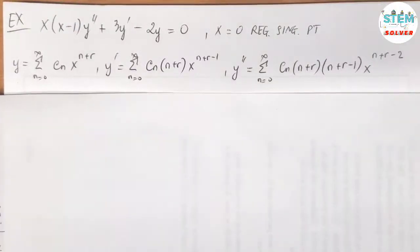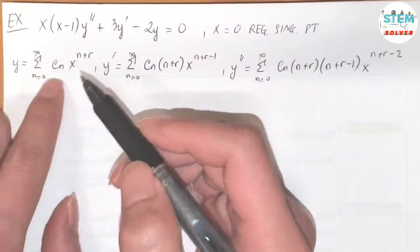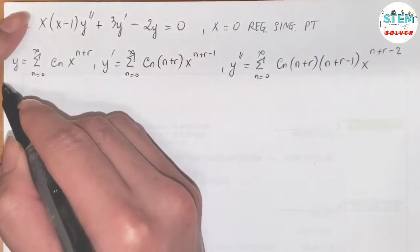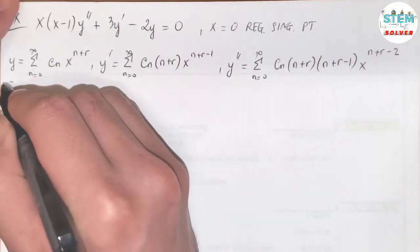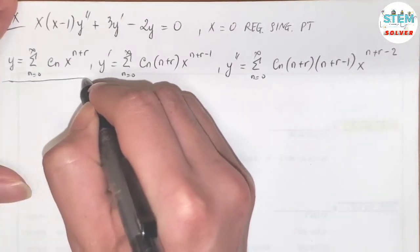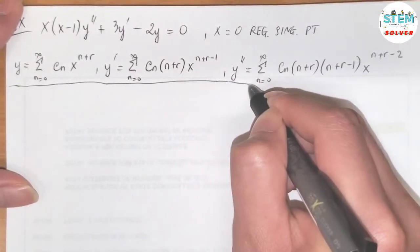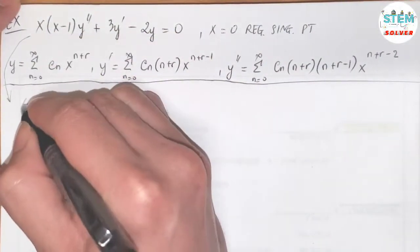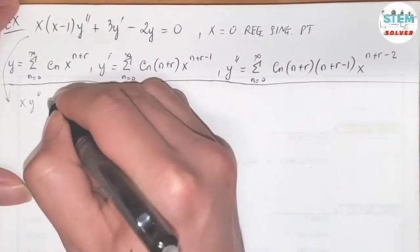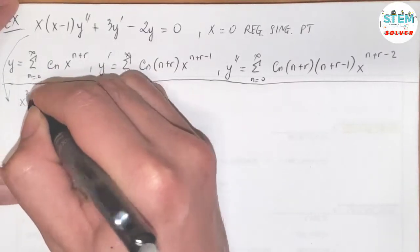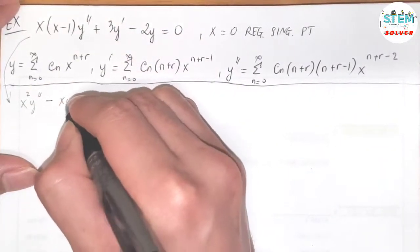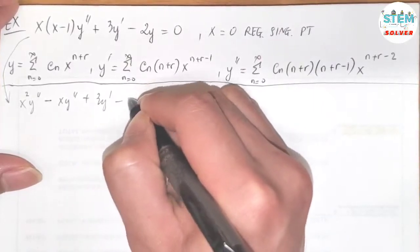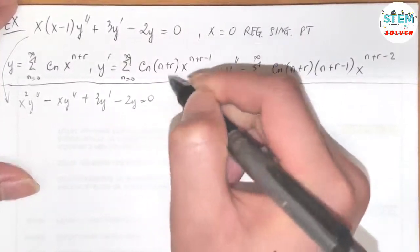Then we are going to plug this into the equation, but before I do that, I'm going to distribute it out. So let me draw a line here to separate these steps. Distributing gives: x times y double prime minus x times y double prime plus 3y prime minus 2y equals 0.